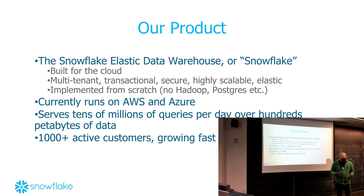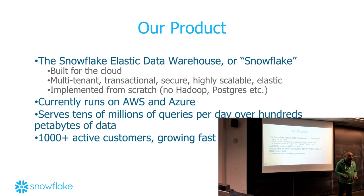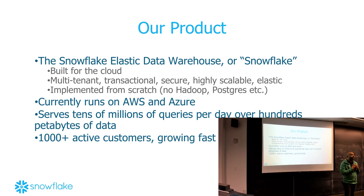Let's start from the beginning. Snowflake is an elastic cloud data warehouse. An OLAP database is different from an OLTP database because we are an analytics database — we scan large amounts of data. We deal with petabytes of data as opposed to OLTP systems, which deal with a lot less.